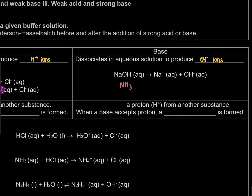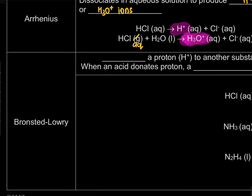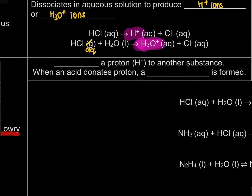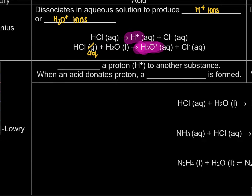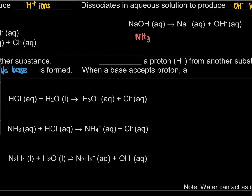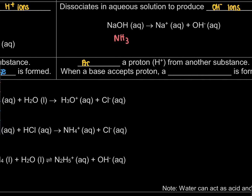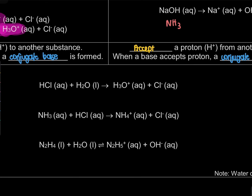The other theory we're going to learn is the Bronsted-Lowry theory. For an acid, it is a species that donates a proton to another substance. Once it donates the proton, a new species is formed — we call it the conjugate base. For a base, it accepts a proton from another substance, and when a base accepts a proton, a conjugate acid is formed.